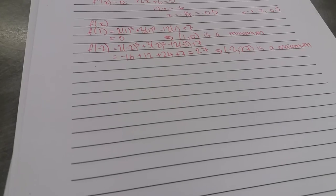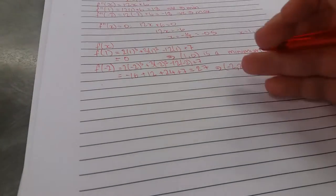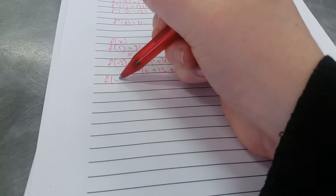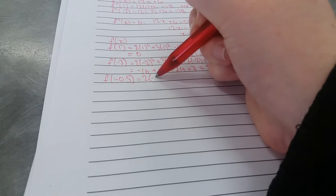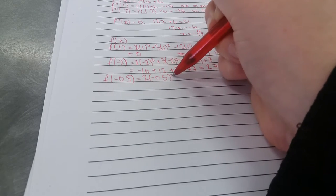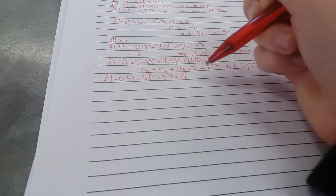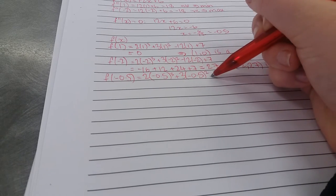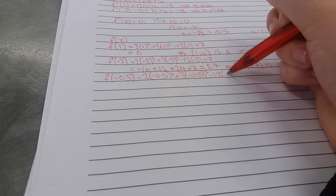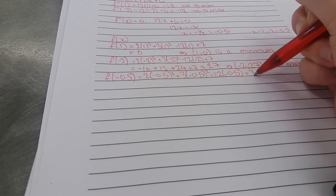Now our last one. f(-0.5) = 2 times (-0.5)³ plus 3 times (-0.5)² minus 12 times (-0.5) plus 7.